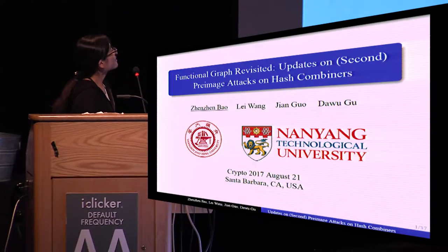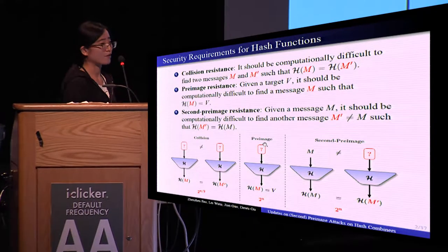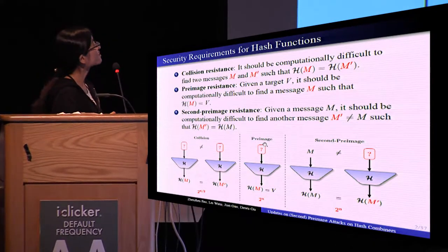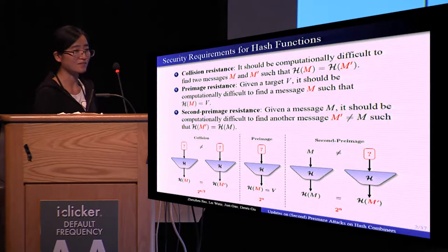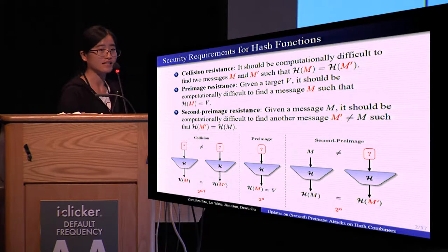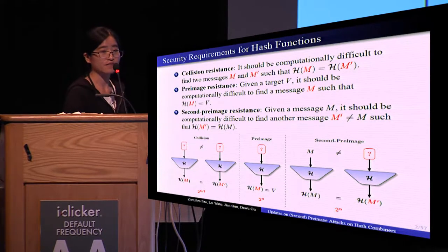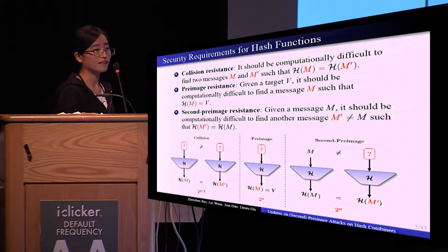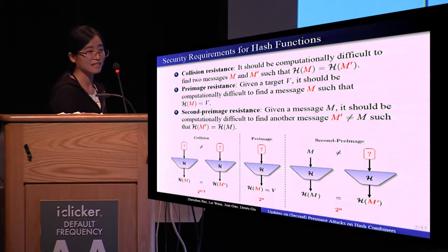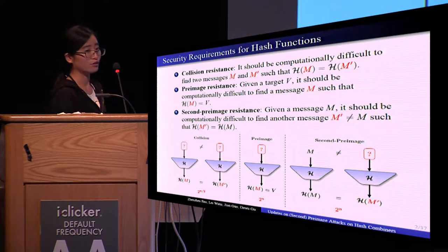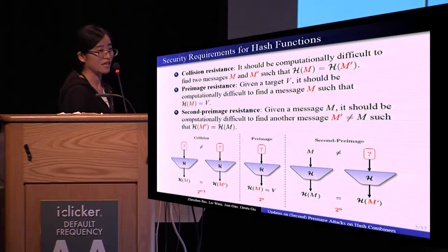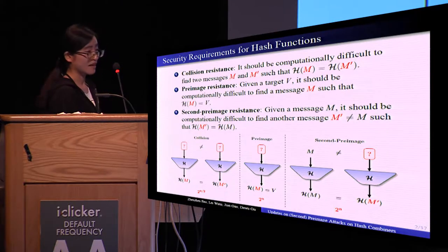First, recall the security requirements for hash functions. The first is collision resistance — it should be difficult to find two distinct messages that have the same message digest. The second is pre-image resistance: for a given target value, it should be difficult to find a message whose digest equals that value. And second pre-image resistance: for a given message, it should be difficult to find another message with the same digest.